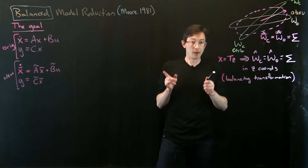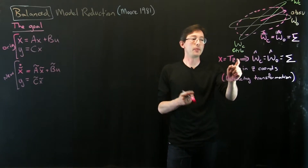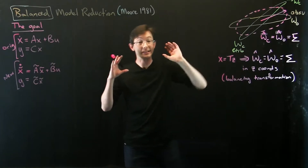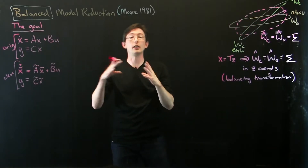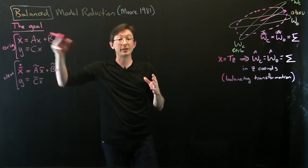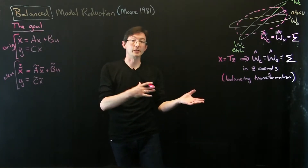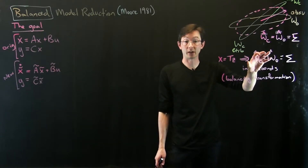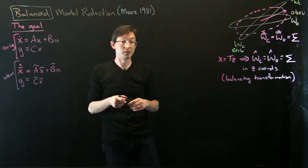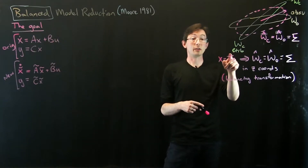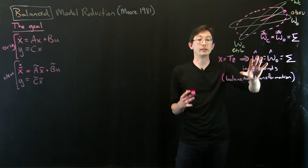Welcome back. So now we have a coordinate transformation T that makes our controllability and observability Gramians equal and diagonal. The controllability and observability Gramians quantify, in this very big high-dimensional system, which directions are most controllable and most observable, and least controllable and least observable. These are very useful geometric quantities — square matrices of size n by n, where n is the dimension of x. Last time we showed there is a coordinate transformation T into new Z coordinates where the Gramians are balanced.